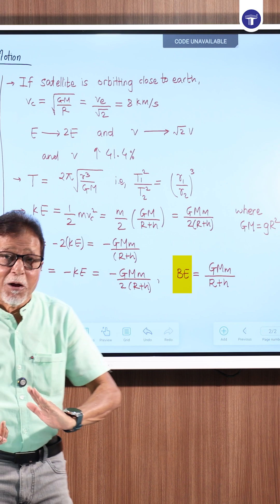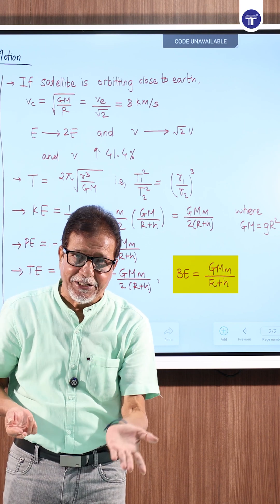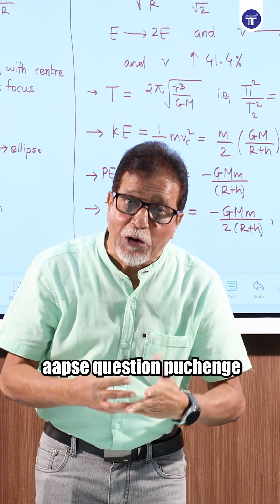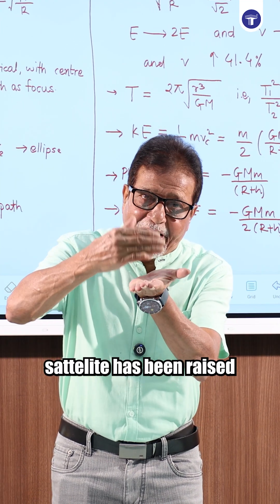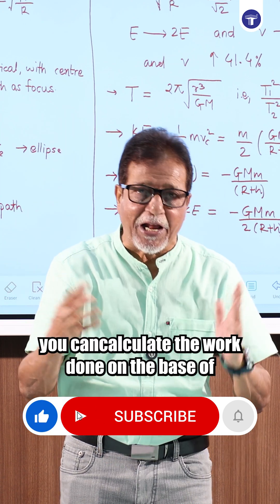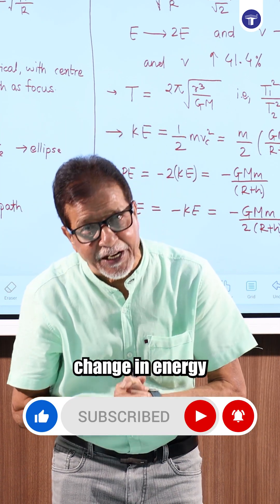And binding energy is minus of total energy, that is GMm/(r+h). If a question asks about raising the satellite from height R to height 2R, what will be the work done? You can calculate the work done on the basis of change in energy.